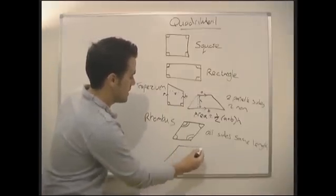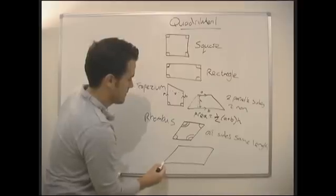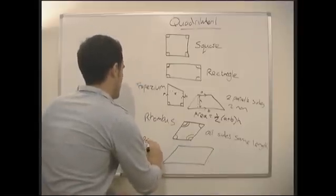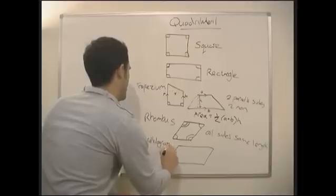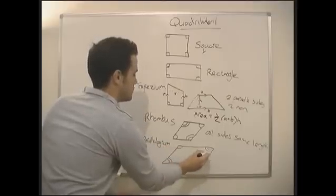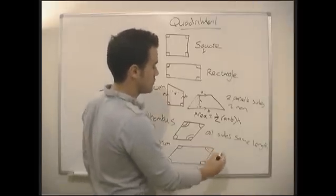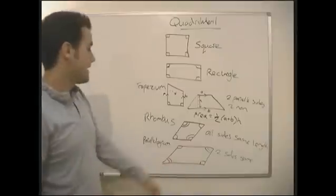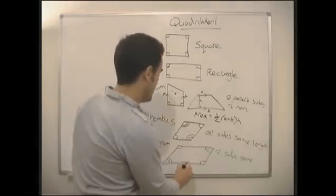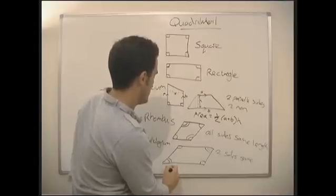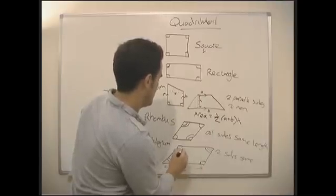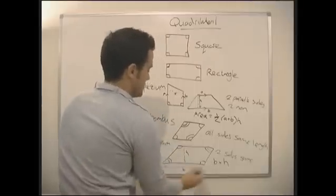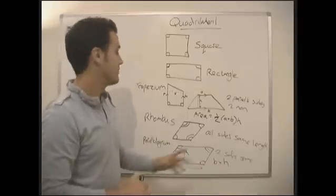Very similar to the next one, which is a parallelogram. A rhombus is a pushed-over square, and a parallelogram is a pushed-over rectangle. With a parallelogram, opposite angles are equal to each other, and two pairs of sides are the same. The area is just base times height — no half in it, just base times height. That's the same for both the rhombus and the parallelogram.